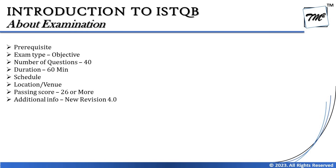The examination type is objective — strictly MCQ. There will be 40 questions, each with four options, and any one can be right. You may find on the internet that there are five options asking you to select two correct answers, but that happens only in the advanced level for test analyst and technical test analyst — not in foundation. Foundation strictly has four options and any one can be right.